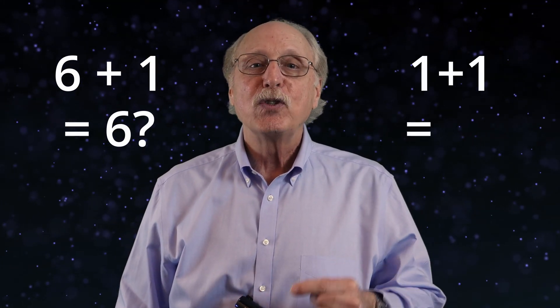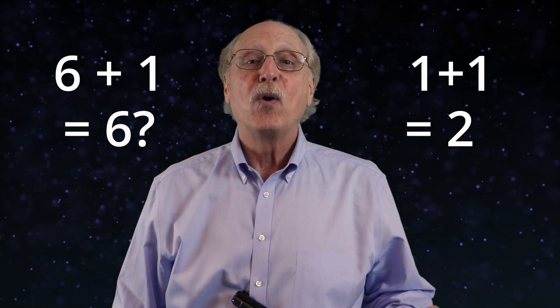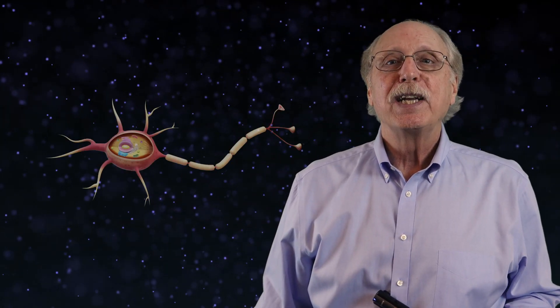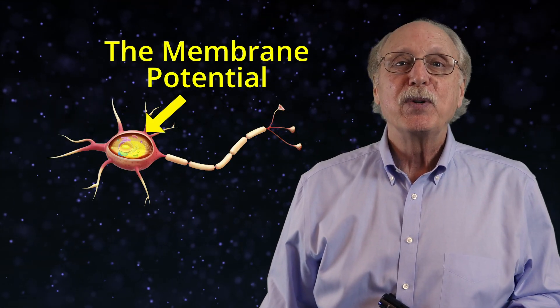Later in this video, I'll show you why a biological neuron using this model will always calculate that 6 plus 1 equals 6, and will calculate that 1 plus 1 equals 2 only some of the time.